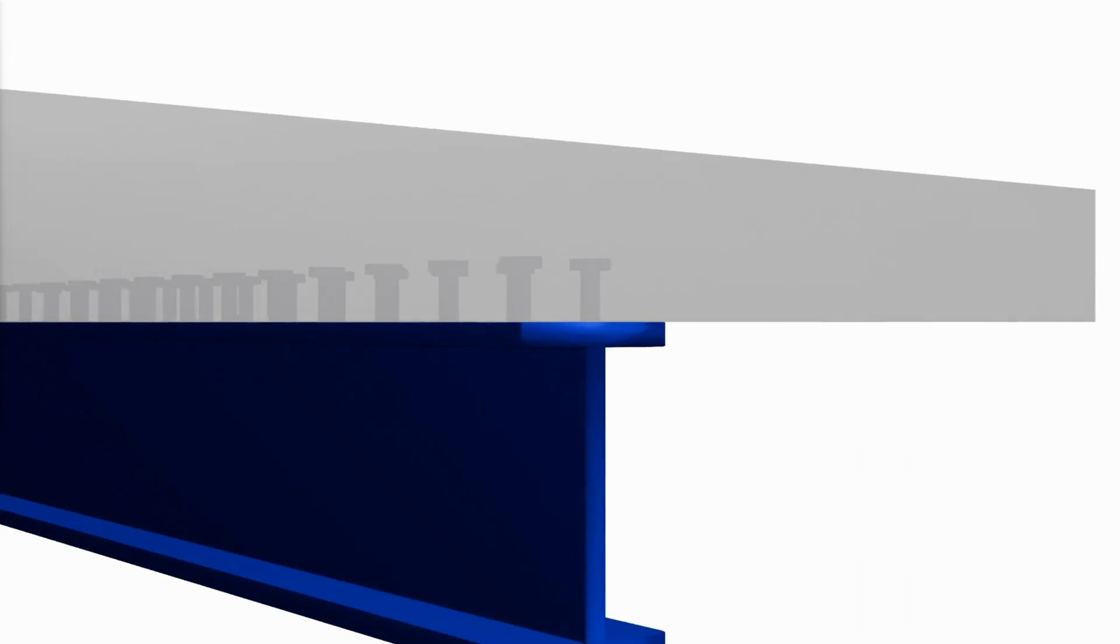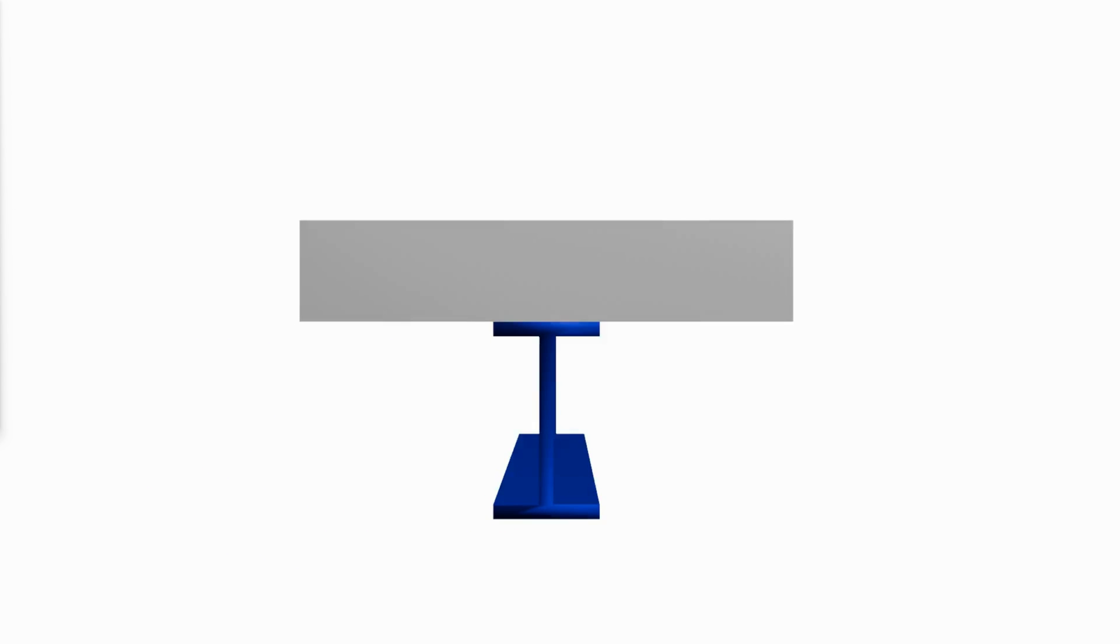In a floor or roof system, a portion of the slab acts with each steel beam to form a composite beam consisting of the rolled steel shape and augmented by a concrete flange at the top.